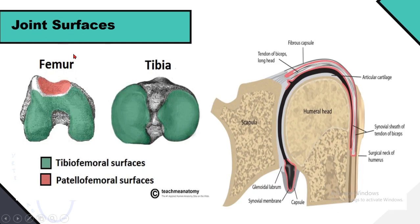Joint surfaces are the ending points of the bones which form a joint — smooth white tissue that covers the end of the bone and comes together to form the joint. For example, the distal surface of the femur and proximal end of the tibia bone: in green, the tibiofemoral surface, and in red, the patellofemoral surface. Another example is the shoulder joint, showing the glenoid cavity surface of the scapula and the joint surface of the humerus bone.